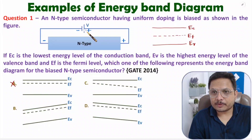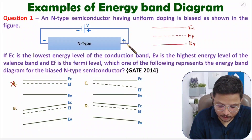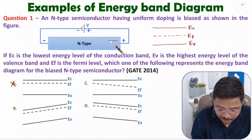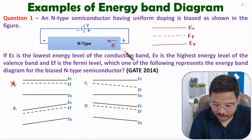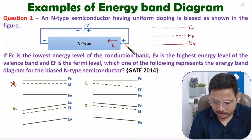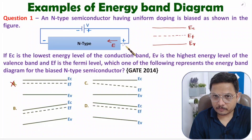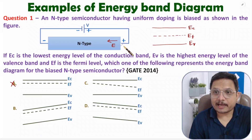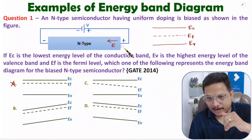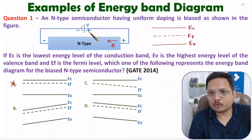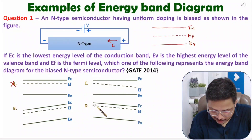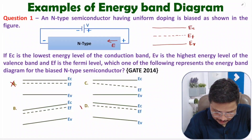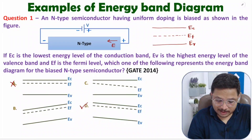When the battery is connected, with the positive terminal on one side and negative on the other, an electric field is created in that direction. Because the electric field is present, the energy levels will have lower values on the positive terminal side and higher values on the other side. Looking at options A, B, C, D, the correct one is where Ec, Ef, and Ev all have lower values on one side and higher values on the other — that is our correct option.